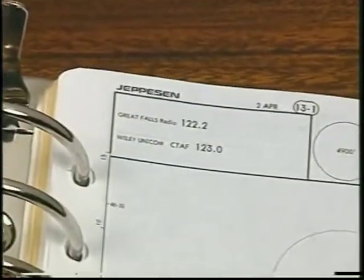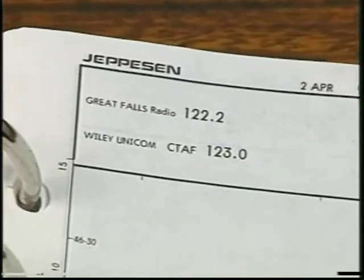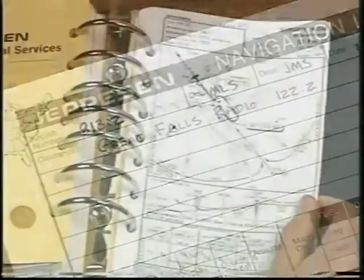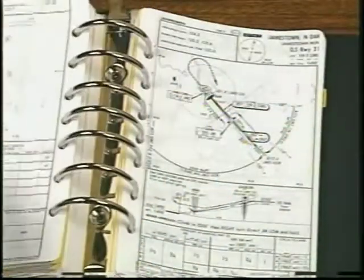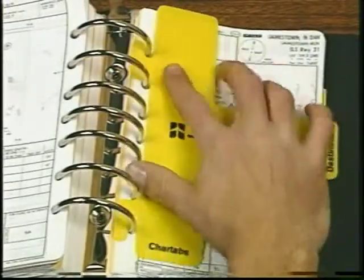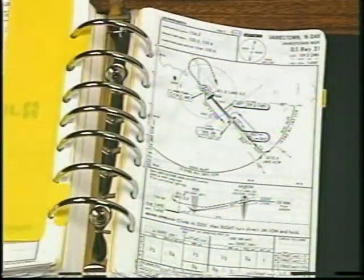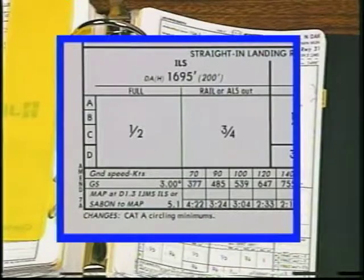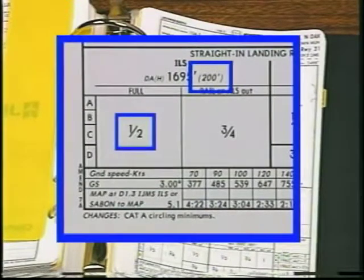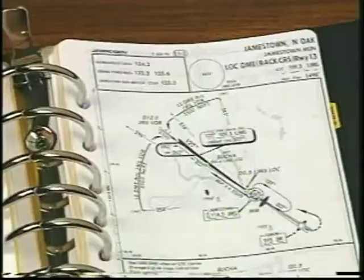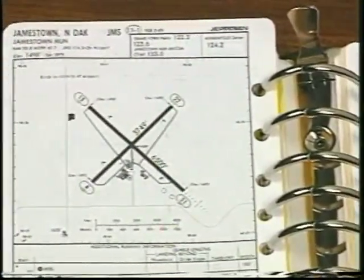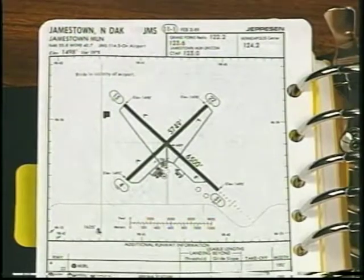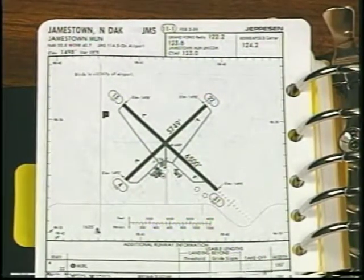Using the approach chart, check to see what communications frequencies are used at the airport and record them on the navigation log. Turning to your destination airport, check to see if there's a standard terminal arrival route — you find that there isn't a STAR for this area. However, Jamestown does have a variety of approaches, including an ILS with minimums of 200 feet and a half mile visibility. You should also take a few minutes to study the Jamestown airport diagram. Familiarity with the taxiways and runways can be very helpful for ground operations and for orientation if you need to make a circling approach.